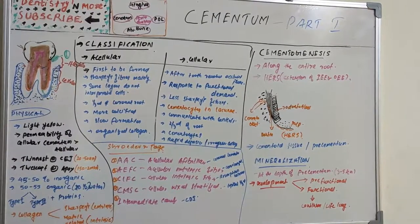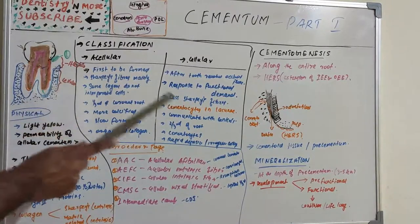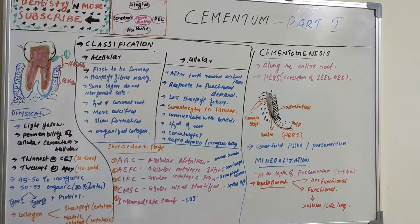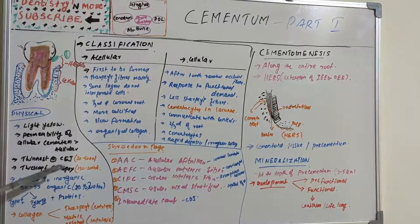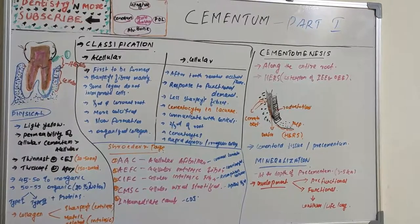Acellular extrinsic fiber cementum (AEFC) forms both pre- and post-eruptively. It is secreted by fibroblasts, located on the apical portion of the root, and comprises a portion of the mixed fiber cementum at that location. Otherwise it is acellular extrinsic fiber cementum.